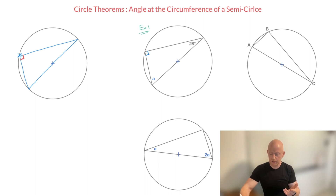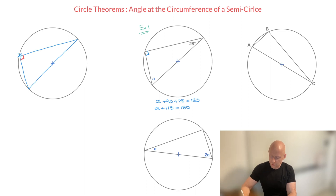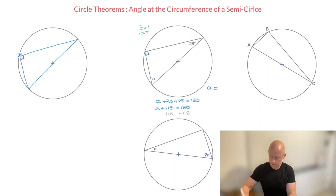In other words, 28 plus 90 plus A must equal 180. We know that A plus 90 plus 28 must equal 180. Now 90 plus 28 is 118, so A plus 118 must equal 180. Finally, to find A, all we have to do is subtract 118 from both sides of this equation. Doing so leaves us with A equals 180 minus 118, which is 62 degrees. And we're done.